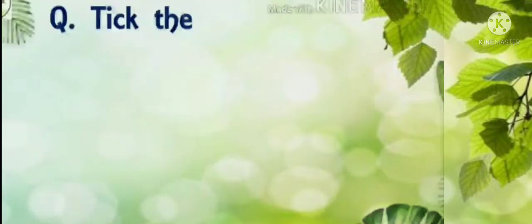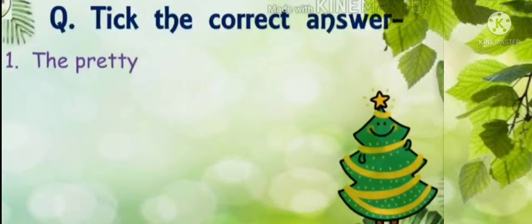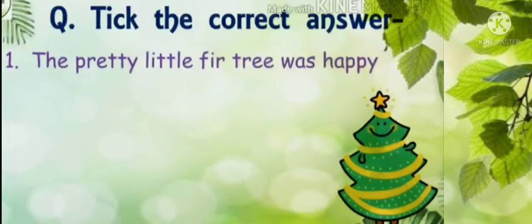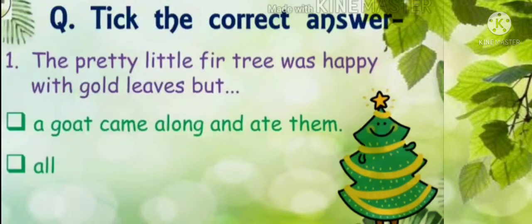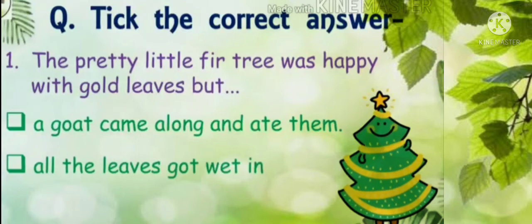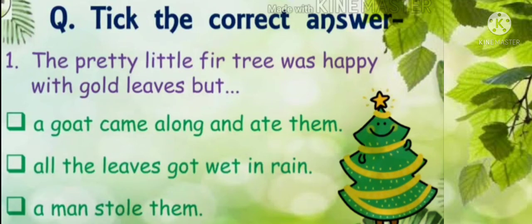Now, tick the correct answer. Read the options given and tick the correct answer for each question. First question: The fir tree was happy with gold leaves, but — a goat came along and ate them; all the leaves got wet in rain; or a man stole them. Which is the correct sentence? The answer is: a man stole them.